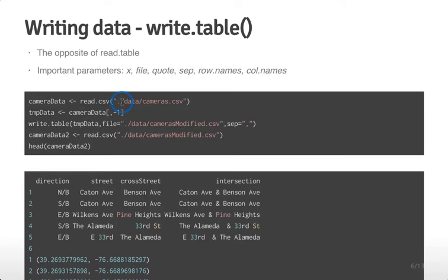We read the data in from ./data/cameras.csv, then remove the first column using a minus one index — you can use negative symbols to remove columns or rows from a data frame. We store the result in a variable called tempData. Then we write it out using write.table, specifying the variable name, the output file camerasModified.csv, and a comma separator since we want to read it back in with read.csv.